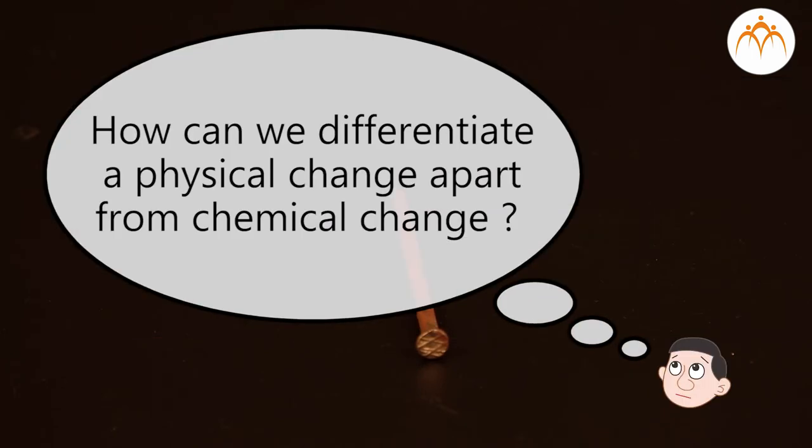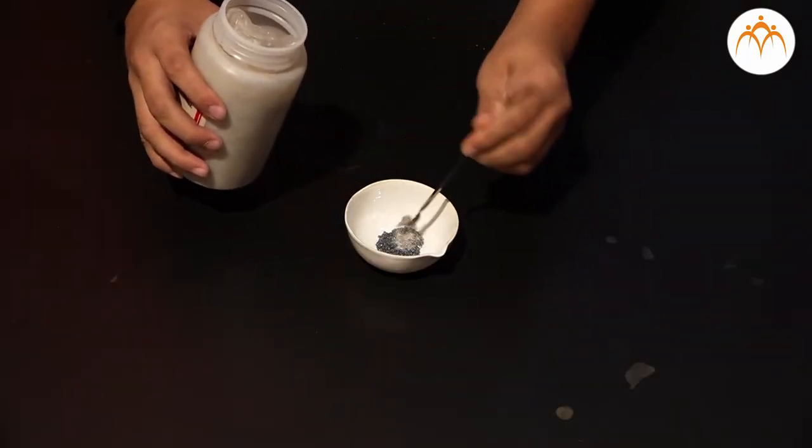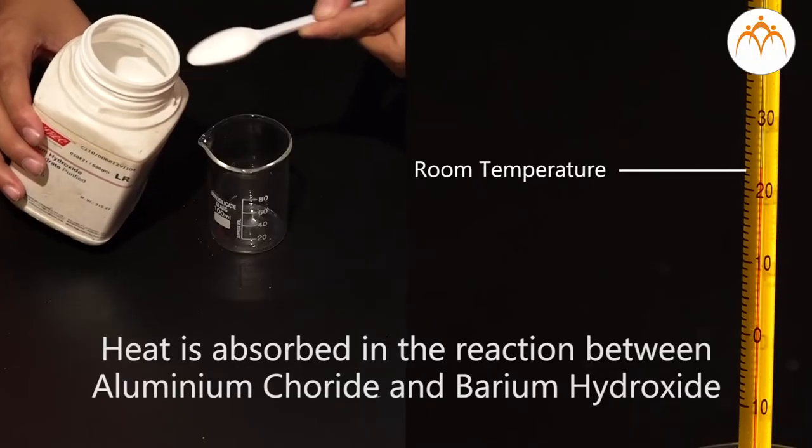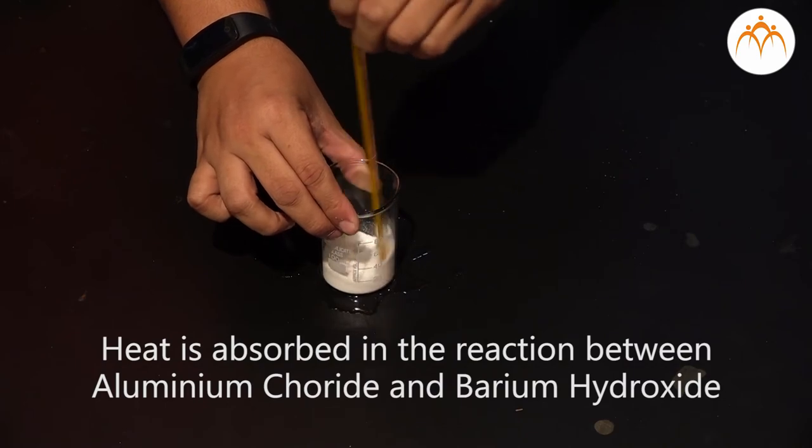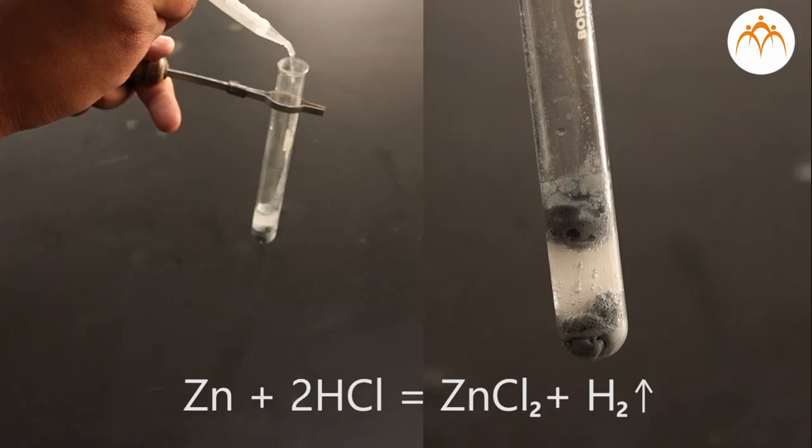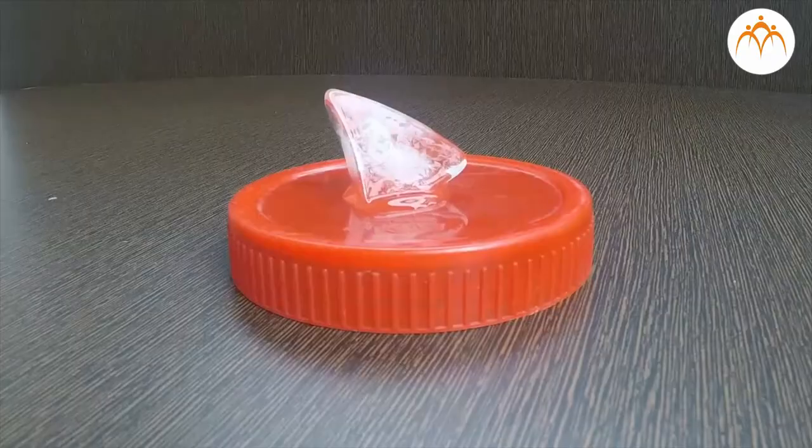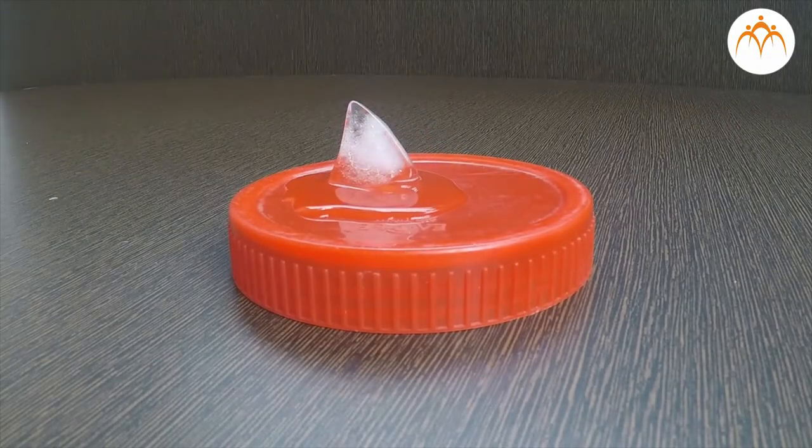How can we differentiate a physical change apart from chemical change? First, we look for an indication that a chemical change has occurred. Chemical reactions release or absorb heat or other energy, or may produce a gas, odour, colour, sound or light. If we don't see any of these indications, a physical change likely occurred.